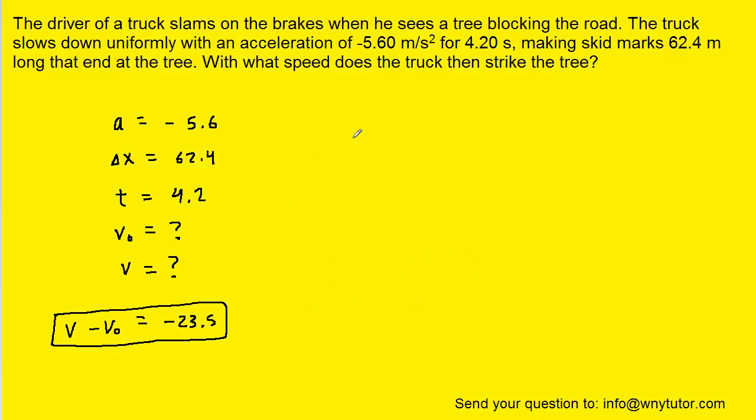We will next consider a different equation from kinematics. This one might be used less frequently. We have the displacement equaling this term in parentheses, which is essentially the average velocity. It's the final plus the initial divided by 2, and then multiplied by time.